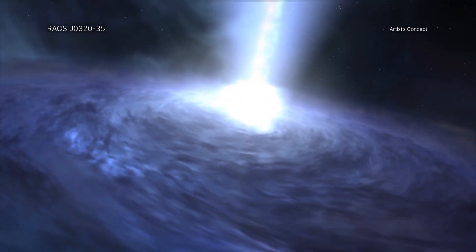If RAGS J0320-35 is indeed growing at a high rate, estimated at 2.4 times the Eddington limit, and has done so for a sustained amount of time, its black hole could have started out in a more conventional way with a mass less than 100 suns, caused by the implosion of a massive star.